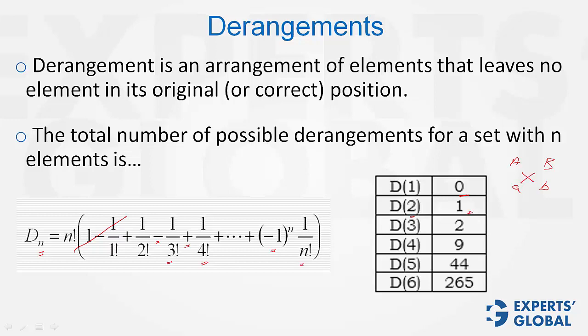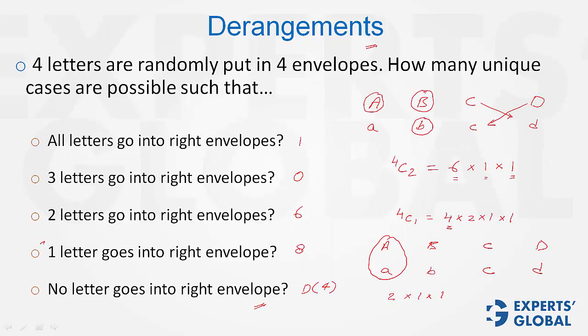d3 is 2. So, imagine in this particular question, what happened? Out of four letters, 1 went into the correct envelope, and the other three, imagine, could be deranged in two times, one times, one way.